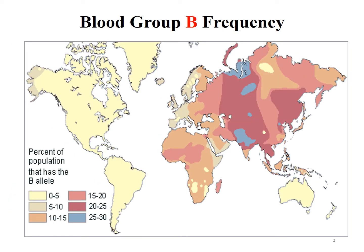As for blood group B, it is even more interesting because you can hardly see it in the whole American continent and Australia. But blood group B is more prominent in the Central Asia region, especially in India, with 25 to 30%.